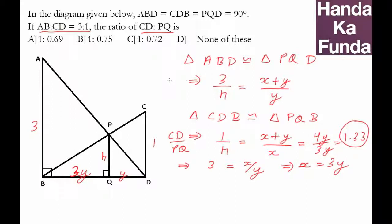Now 1.33, where is it in the options? 1.33 or 4 by 3? This is not 4 by 3, this is not my answer. Option 1 is 2.75. This indeed is the ratio of 4 by 3, which is 1.33. So our answer for this particular question is option B. Thank you.